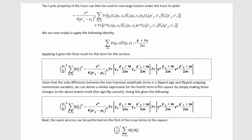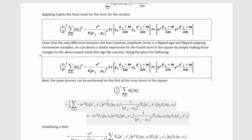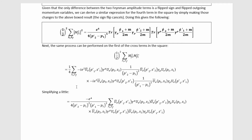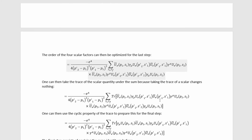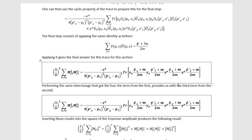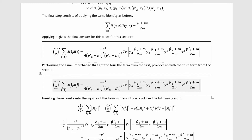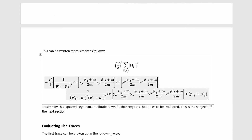Given that the only difference between the two Feynman amplitude terms is a flipped sign and flipped outgoing momentum variables, we can derive a similar expression for the fourth term in the square by simply making those changes to the first-term result — the sign flip cancels. The same process is then performed on the cross terms. For the first cross term, plugging in the relevant amplitude and conjugate, simplifying, reordering scalar factors, taking advantage of the cyclic trace property, and applying the gamma matrix identity gets us down to a result. The second cross term follows by the same interchange. Plugging all that in gives a nasty expression which we rewrite more compactly.